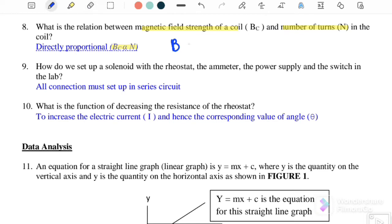How do we set up a solenoid with the rheostat, ammeter, power supply, and switch in the lab? All components must be connected in series circuit.